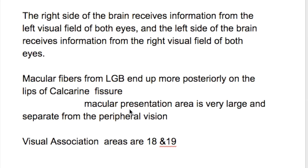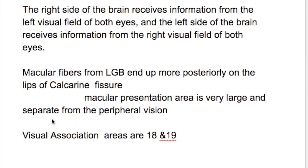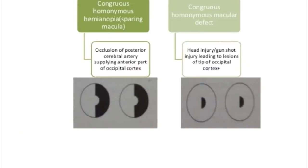The macular representation area is very large and separate from the peripheral area. Arterial occlusion produces homonymous hemianopsia. Blood supply of the occipital cortex is by the posterior cerebral arteries and the branches of the middle cerebral artery. Occlusion of the posterior cerebral artery produces homonymous hemianopsia with sparing of the macular area.